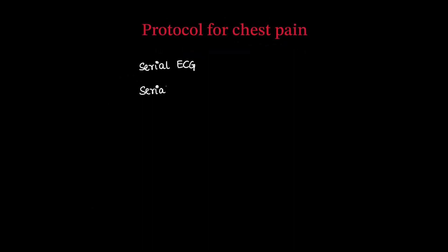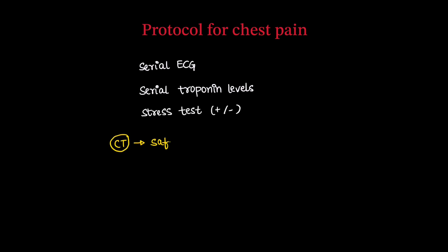When a chest pain patient comes to the emergency, first we perform serial ECGs and serial troponin levels; stress testing may or may not be done. CT is a safe and effective triage method in the emergency setting, with different protocols used for different diagnoses.